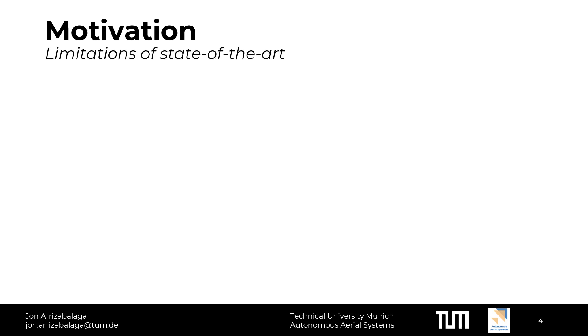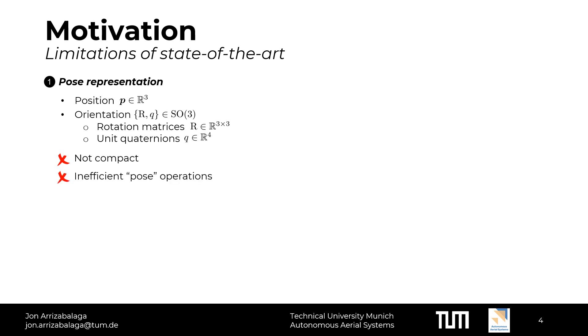To represent the pose of a rigid body in SE3, it is customary to combine a three-dimensional vector of Cartesian coordinates with either a rotation matrix or a unit quaternion. Starting with the rotation matrix, one drawback is that it is not compact, since it is given by a three-by-three matrix, resulting in nine parameters. An alternative solution is to use unit quaternions which only rely on four values. Other than that, with such representations, the computation of rotation and position is performed independently, making it more difficult and inefficient to operate with poses.